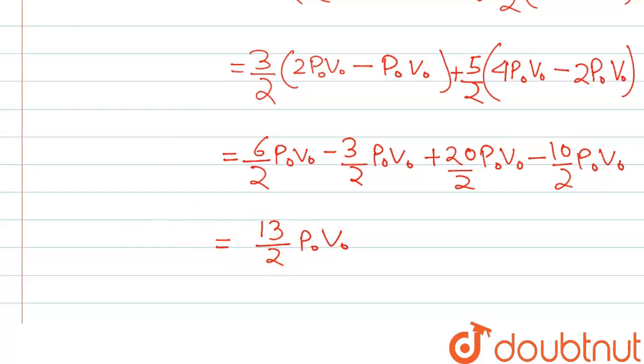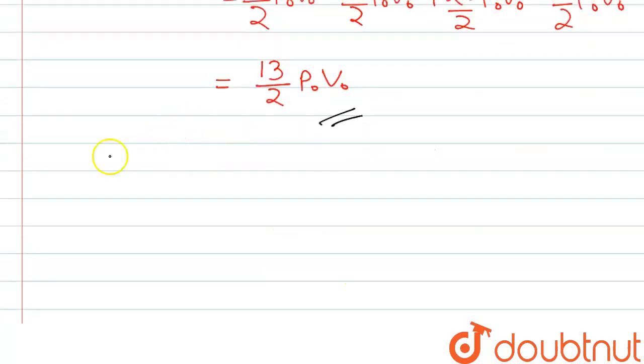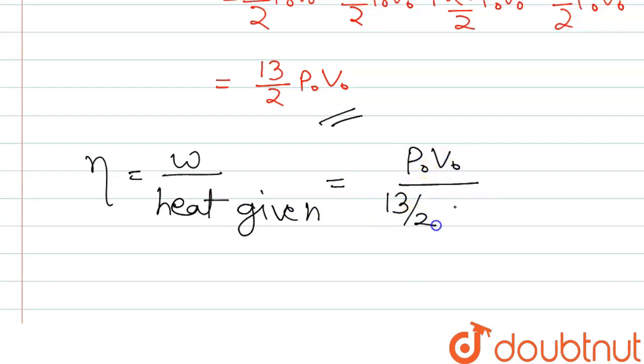Now we have the heat given and we have the work done, so we can calculate the η which is work done by heat given, and this is P₀V₀ divided by 13/2 P₀V₀. Here P₀V₀ both are cancelled out and this can be written as 2/13, which is equal to 0.15. So the efficiency is 0.15.